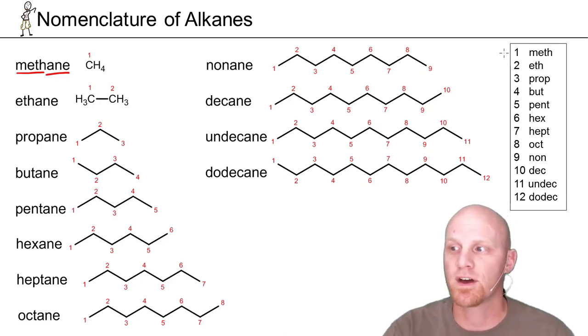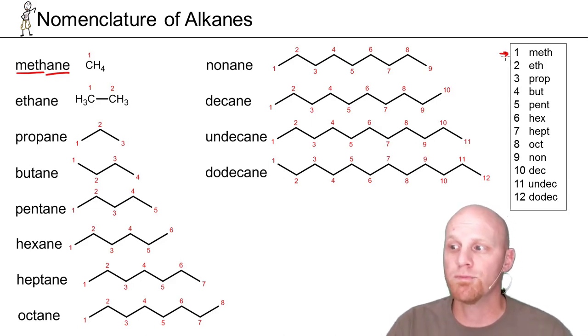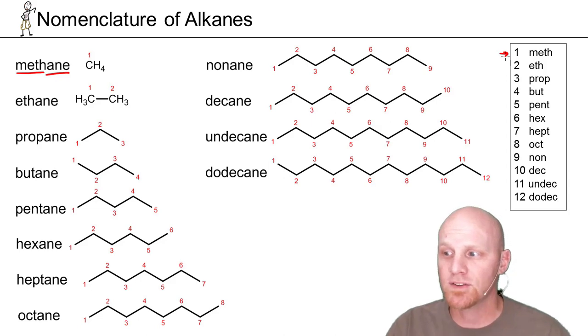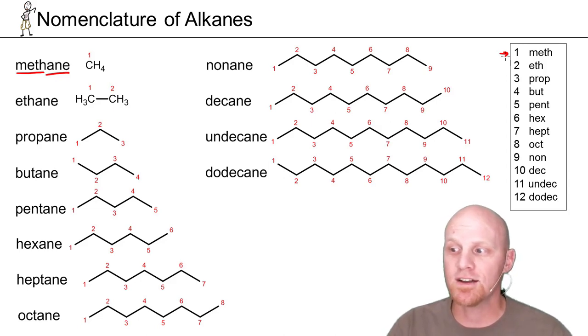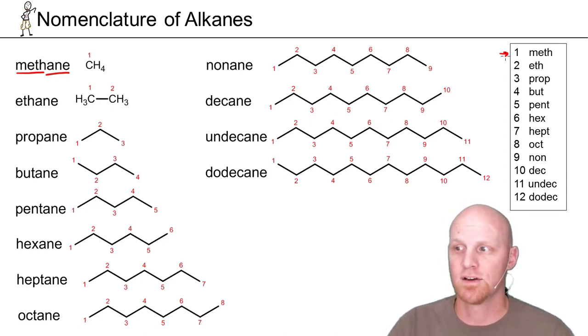Those 12 prefixes are: meth, eth, prop, but, pent, hex, hept, oct, non, dec, undec, dodec — corresponding to 1 through 12 carbons respectively.